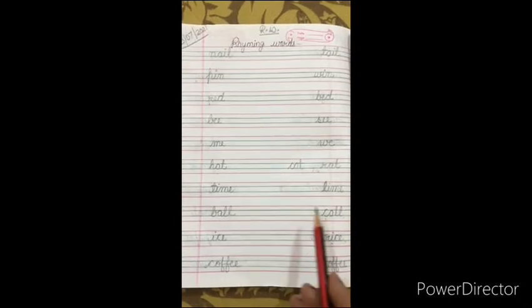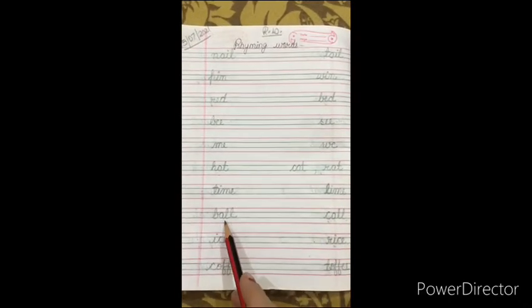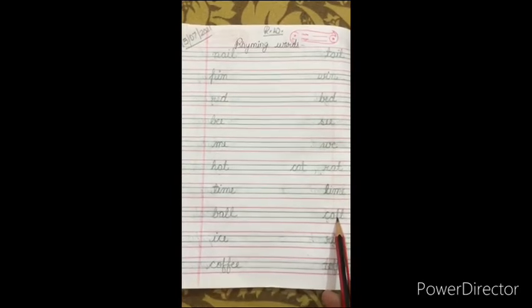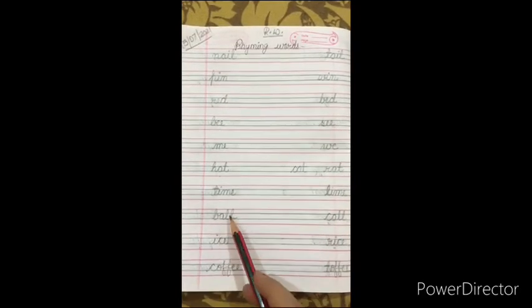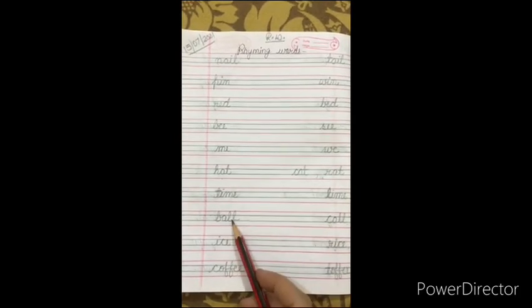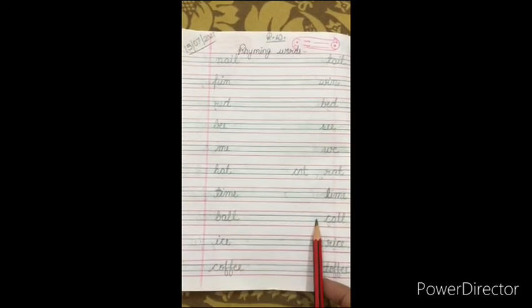Ball. Call. Ball, call. Or kya ho sakta hai ball ka rhyming word? Fall bhi ho sakta hai, F-A-L-L. Ball, fall. Sorry, call. Ball, tall, you can also write.